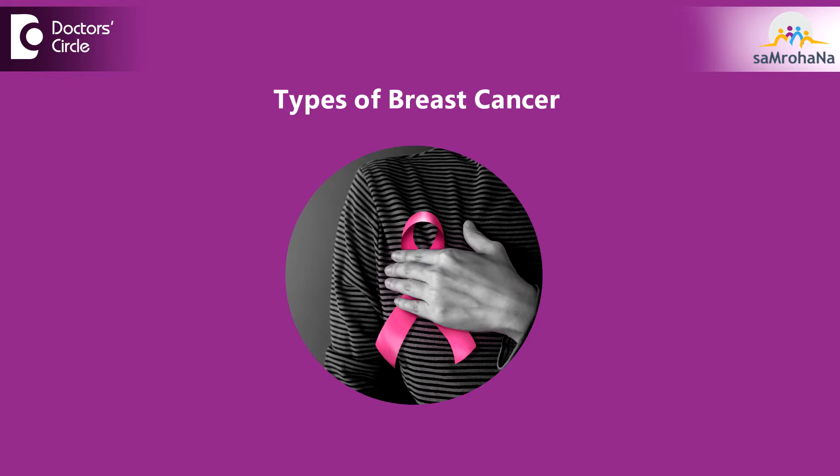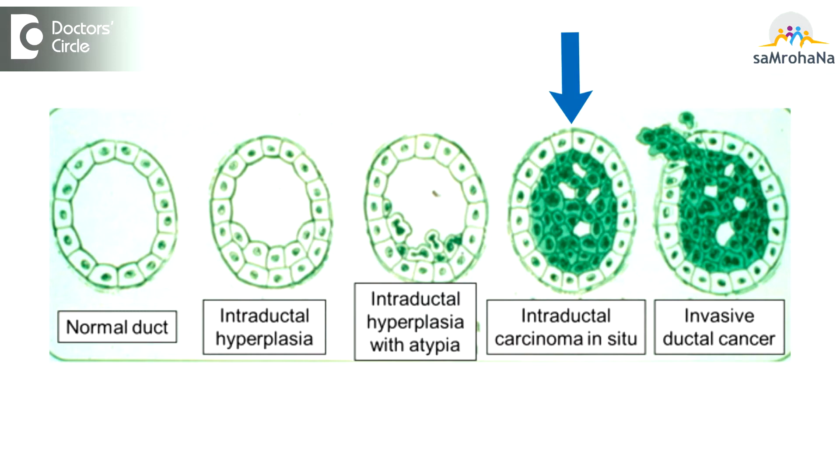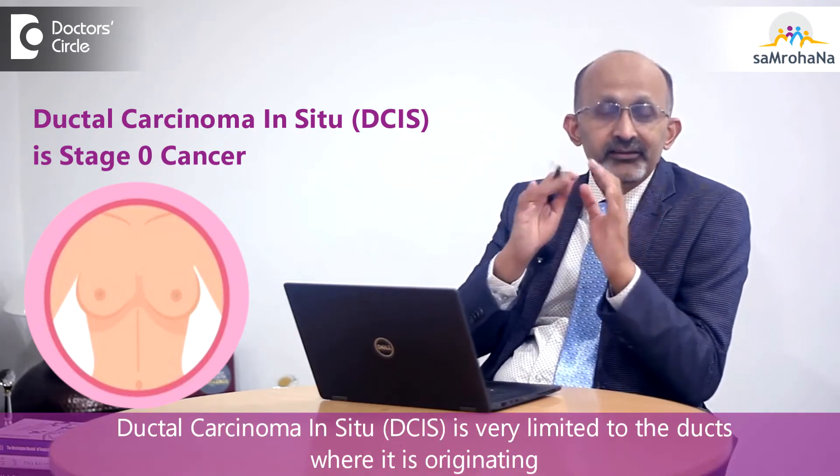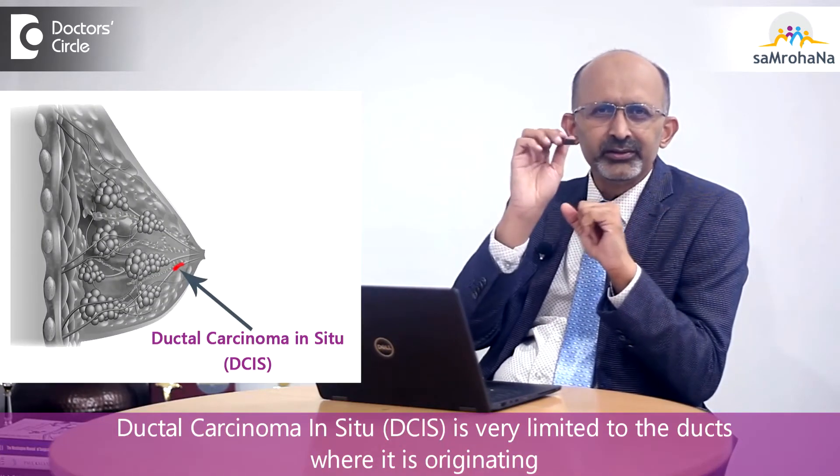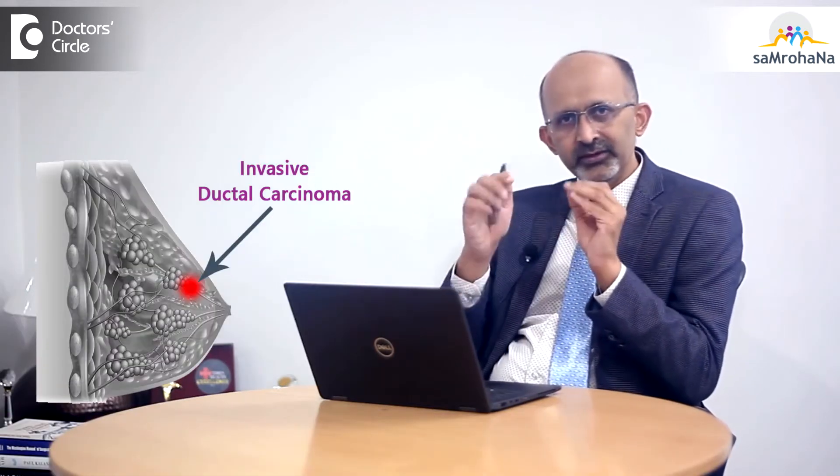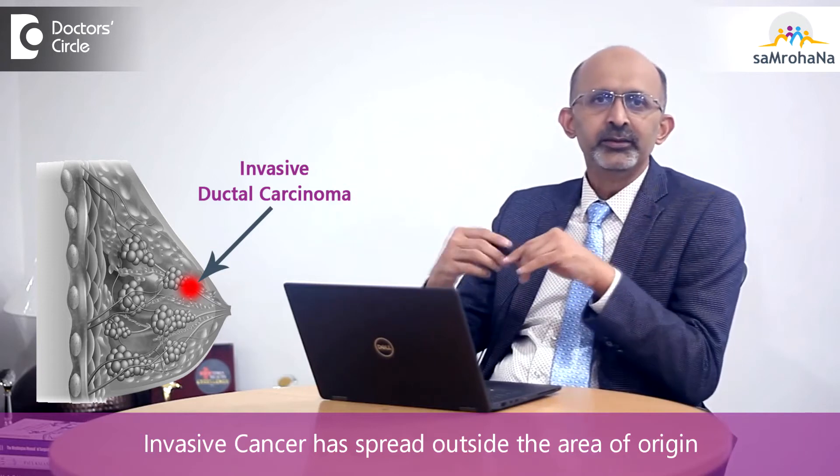We will discuss more about these types of breast cancer, their characters, their specific treatments, and why we need to differentiate between them. You will very commonly hear about ductal carcinoma in situ, or DCIS, and invasive cancer. DCIS is a stage 0 cancer — it is very limited to the ducts where it originates. Invasive cancer means it has gone outside of the ducts or the area where it originated.